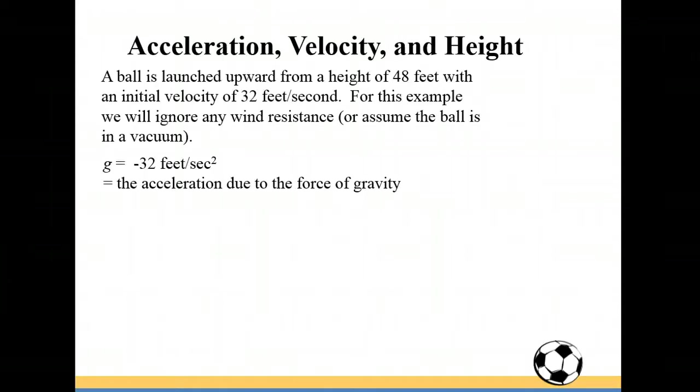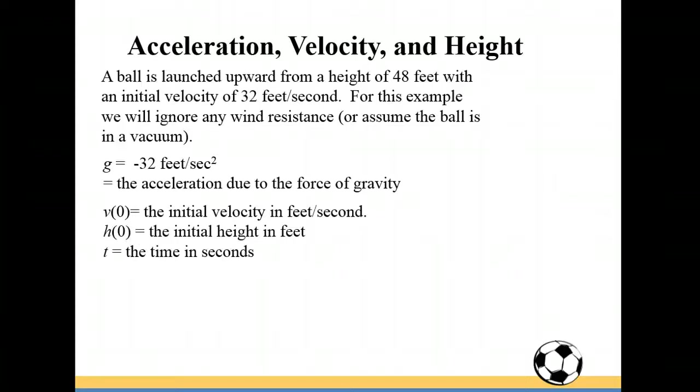The acceleration due to the force of gravity is given by g which equals negative 32 feet per second squared. The initial velocity v(0) is going to be in feet per second. h(0) is the initial height in feet. The time will be in seconds. The formula for the height at time t is h(t) equals one half g t squared plus v(0) t plus h(0).